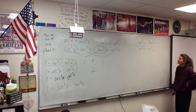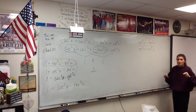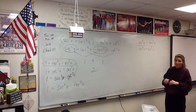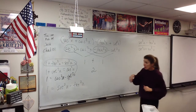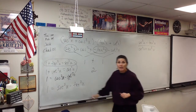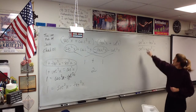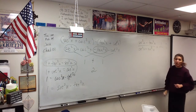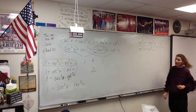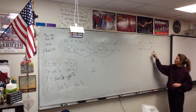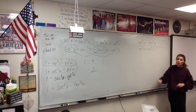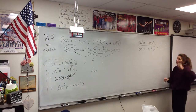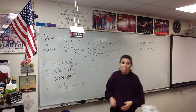Problem 26 looks bad, but the numerator is secant squared minus tangent squared, which we just said equals 1. The denominator is cosine squared plus sine squared — it's a different variable, v instead of u, but cosine squared plus sine squared is always 1. So the answer to that problem is 1 over 1, which is just 1.